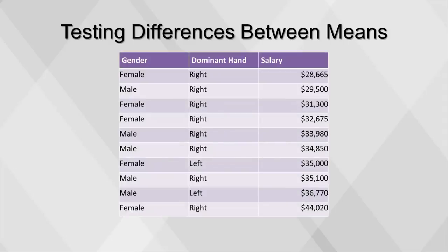Let's return to the question posed at the beginning: do men make more than women? To answer this question, we can use a statistical test called a t-test. This test requires that we make three assumptions about our data, which for now we will assume to be true: the two populations have the same variance, the populations are normally distributed, and each value is sampled independently from each other value.